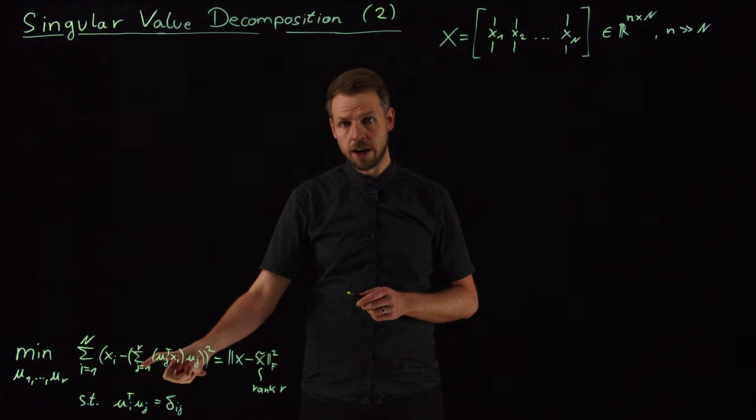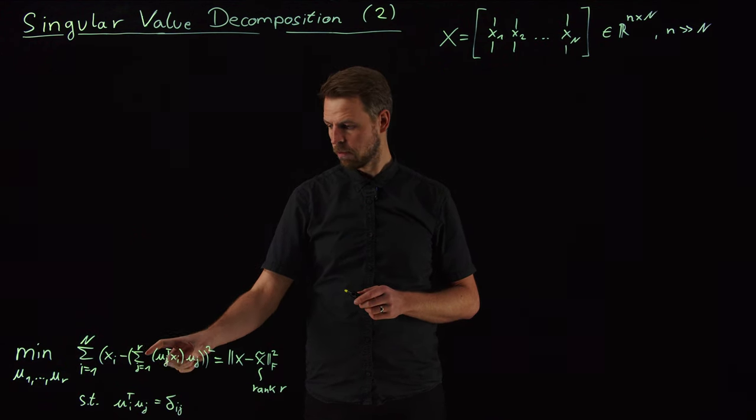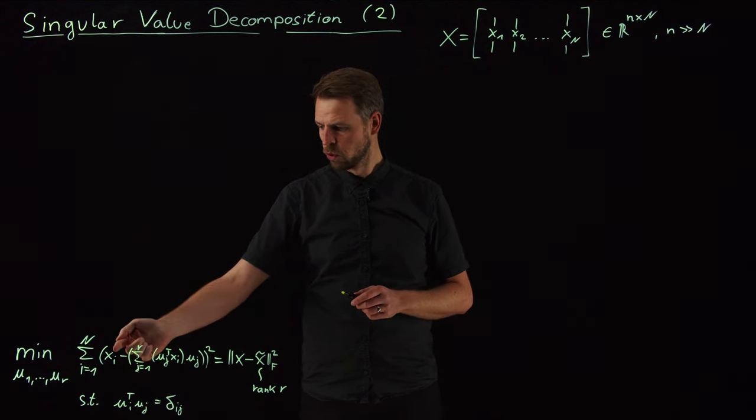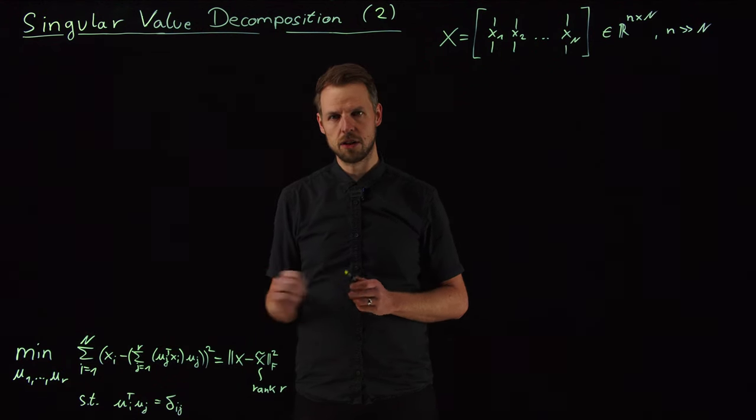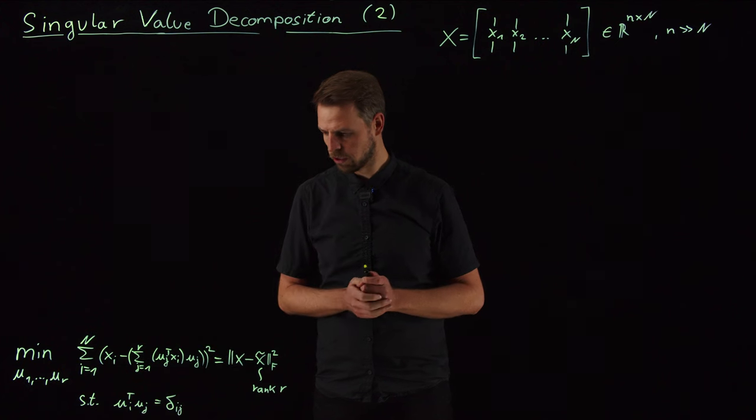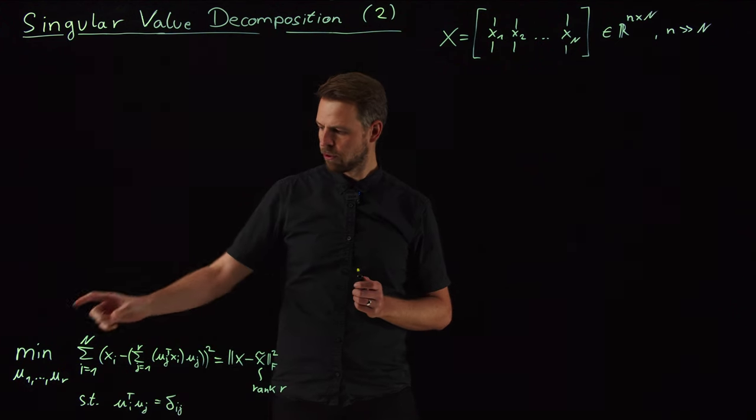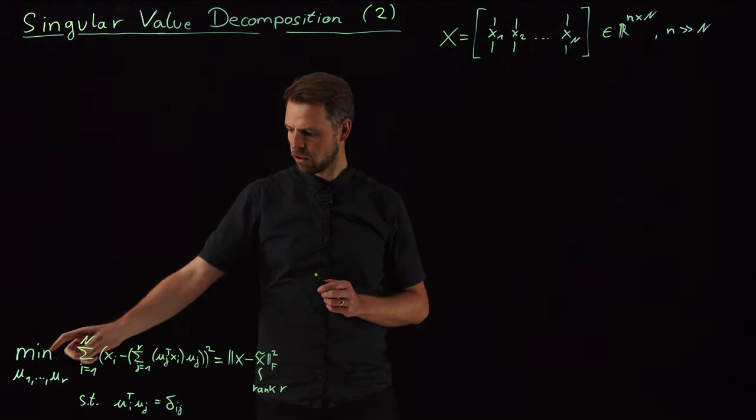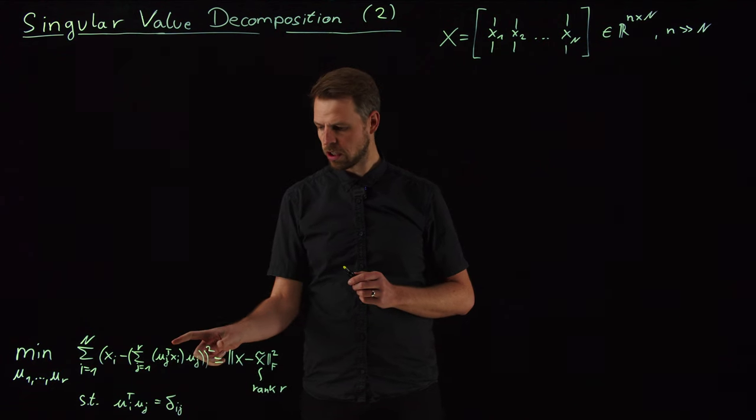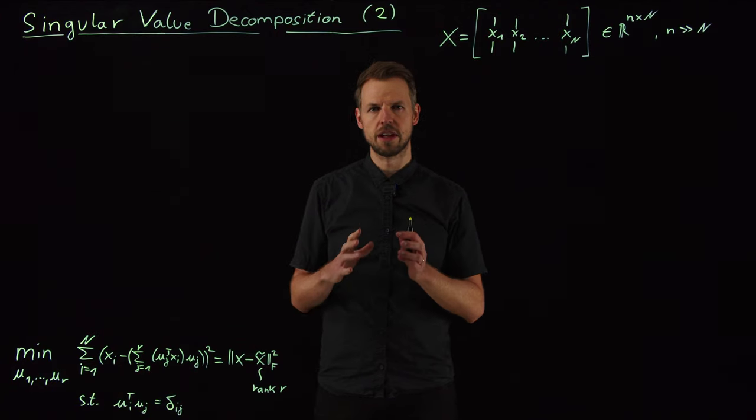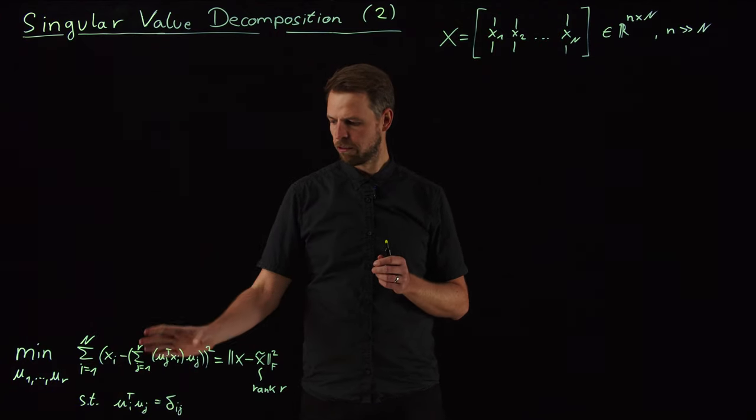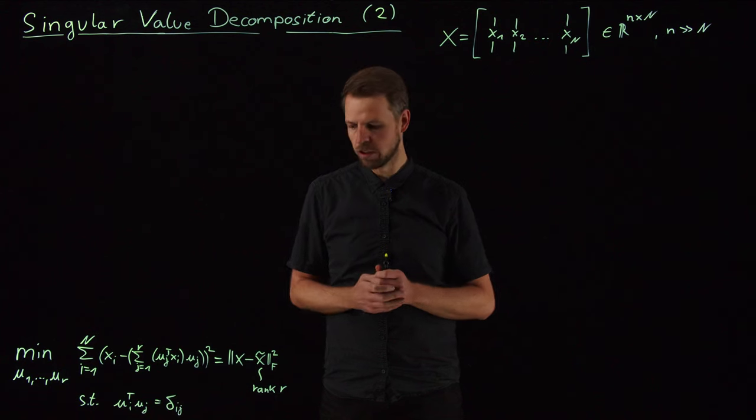So this is a rank R expression. We reduce or restrict our data point to this R dimensional subspace spanned by these R vectors. And the problem is now find the R vectors that minimize this projection error averaged over my entire data set. So it's a data driven technique to identify a best fit basis to my given data set.